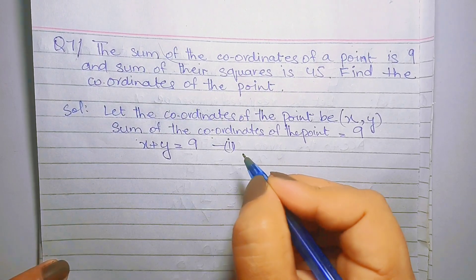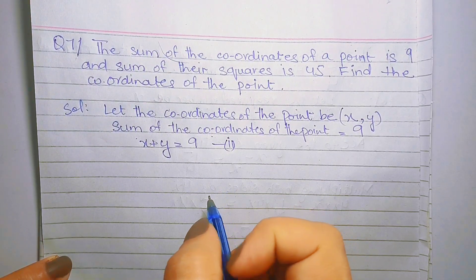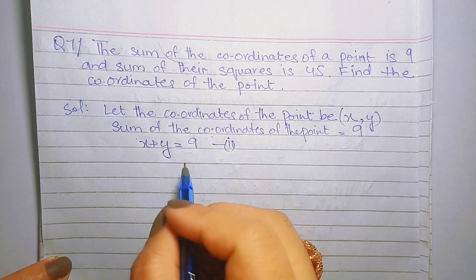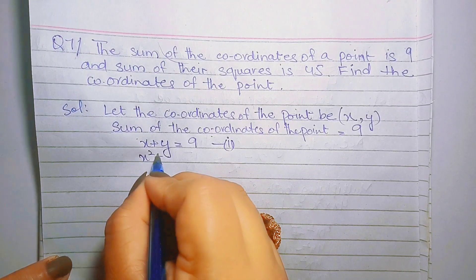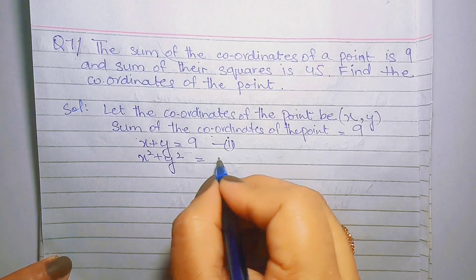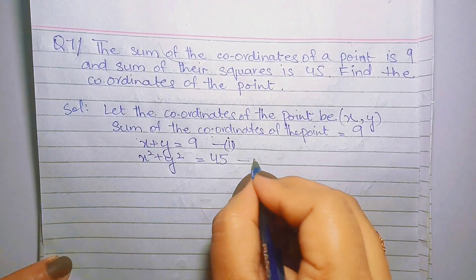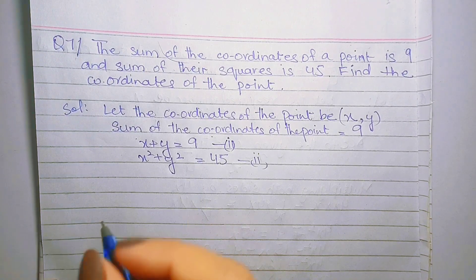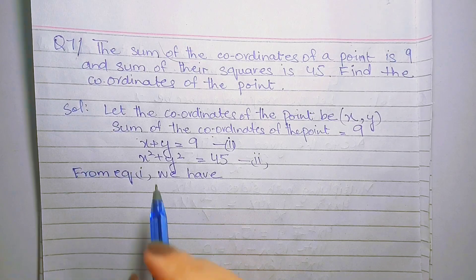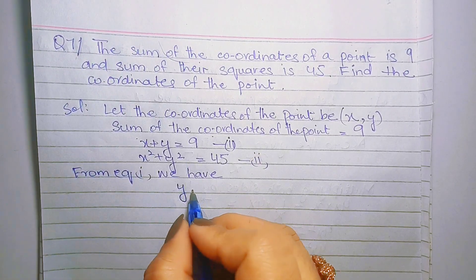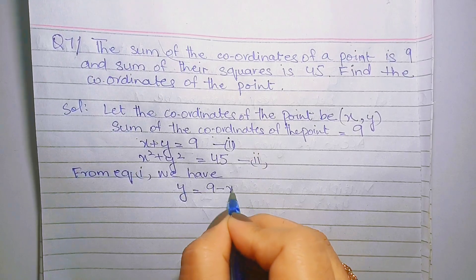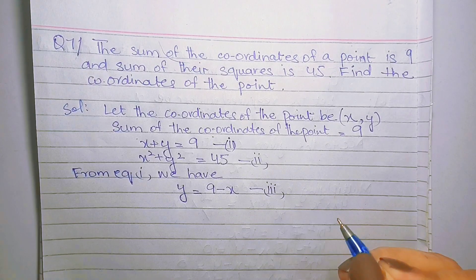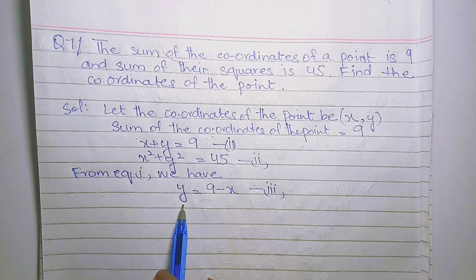According to the first condition, x plus y equals to 9 — इसे equation number 1 का नाम देते हैं। According to the second condition, x square plus y square equals to 45 — इसे equation number 2 का नाम देते हैं। Equation number 1 से y की value निकालते हैं: y = 9 minus x — इसे equation number 3 कहते हैं।